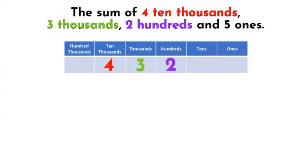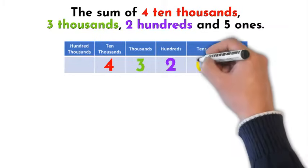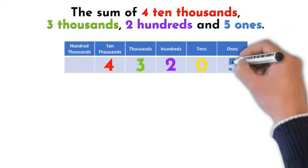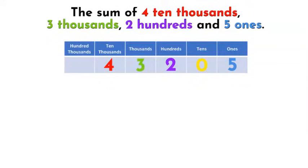Notice, we do not have any number for the tens place. So, let's just put a 0 here. Last, we have 5 ones. Now our place value chart is complete.